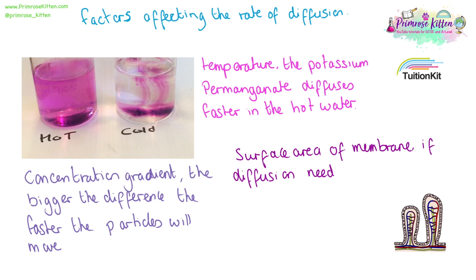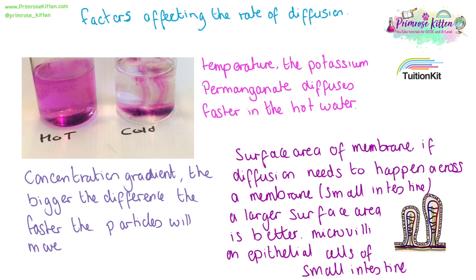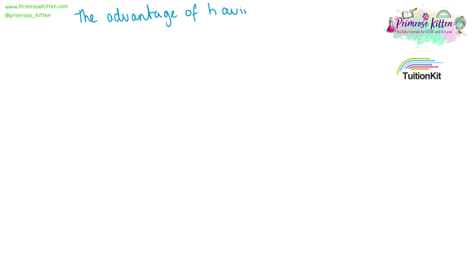The surface area of the membrane also affects diffusion, if diffusion needs to cross a membrane. For example, in the small intestine we need to absorb the products of digestion — a larger surface area is better as there is more space for it to cross. We can see these as the microvilli on the epithelial cells of the small intestine. There is an advantage of having a large surface area to volume ratio when we are talking about diffusion.